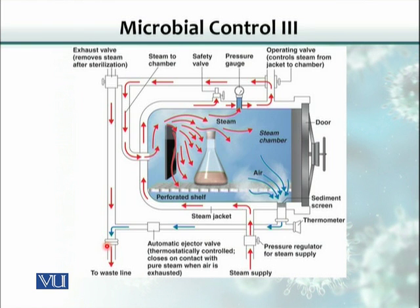This is a schematic diagram of an autoclave where steam is produced in ducts and then injected under pressure. The steam is enclosed in a small container, creating pressure. At 15 psi, the temperature achieved is 121 degrees Celsius. Keeping the object at 15 psi and 121 degrees Celsius for 15 to 20 minutes is enough to achieve complete sterilization.